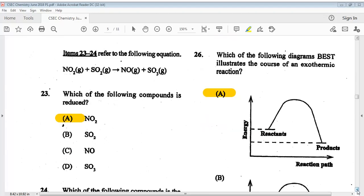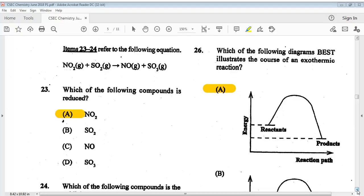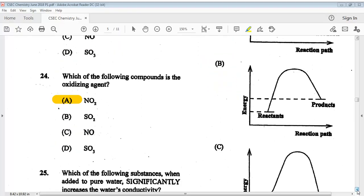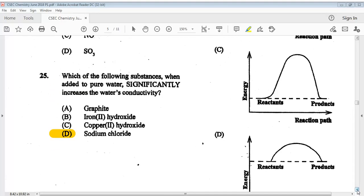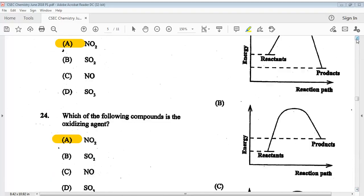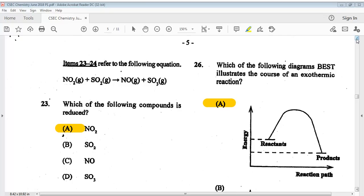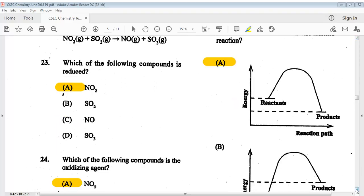Let's go on to twenty-three. Items twenty-three to twenty-four refer to the following equation. Question twenty-three: which of the following compounds is reduced? The answer is A. Question twenty-four: which of the following compounds is the oxidizing agent? The answer again for twenty-four is A. Question twenty-five: which of the following substances, when added to pure water, significantly increases the water's conductivity? The answer is D, sodium chloride. Question twenty-six: which of the following diagrams best illustrates the course of an exothermic reaction? The answer is A.